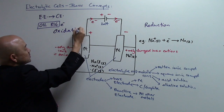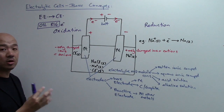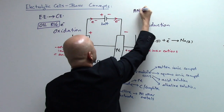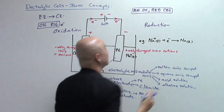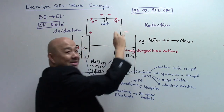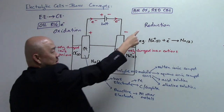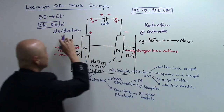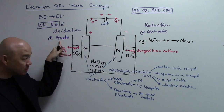Over here the Cl⁻ gives out electrons, so that is oxidation — oxidation is loss of electrons. This is oxidation at this electrode. A second acronym to help you is AN OX RED CAT. AN OX means oxidation occurs at the anode; RED CAT means reduction occurs at the cathode. So reduction occurs at the cathode — that is this electrode — and oxidation occurs at the anode, which means this other electrode is the anode.